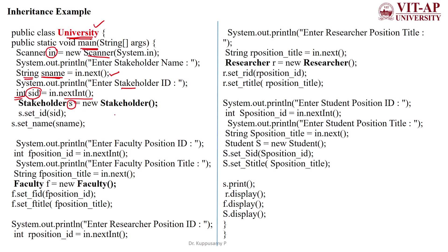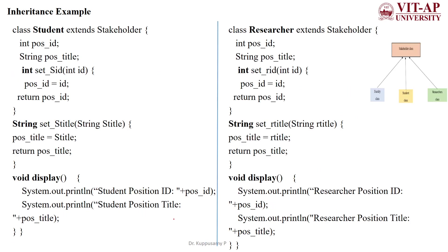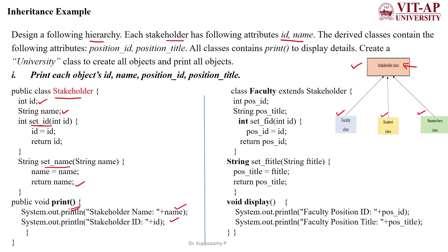We then create an object for Stakeholder and call the two methods set_id and set_name to assign values to the two variables. After that, we call the print method to display the name and id of the stakeholder using the object variable.